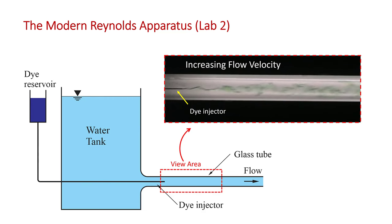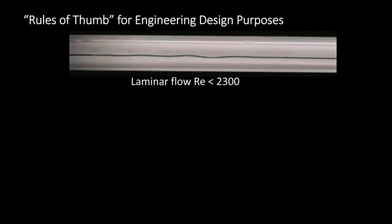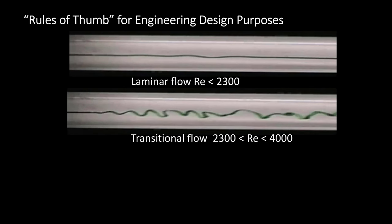Eventually, at even higher velocities, we get fully turbulent flow, with the dye being dispersed across the pipe by the turbulent eddies. Here's a summary of the results of the Reynolds apparatus experiment — general rules of thumb for engineering design purposes. In most cases, it's reasonable to assume laminar flow for a Reynolds number less than about 2300, though slightly different numbers appear in various textbooks. Generally, you get transitional flow from about Re 2300 to 4000 — a wavy type of flow that's not fully turbulent.